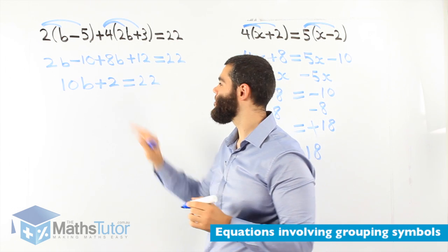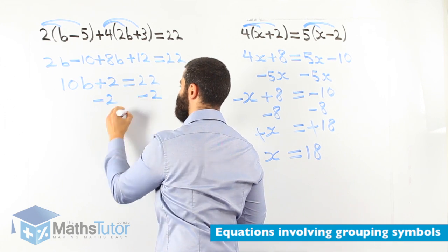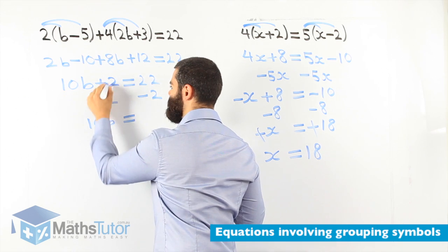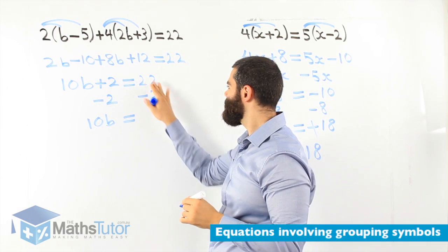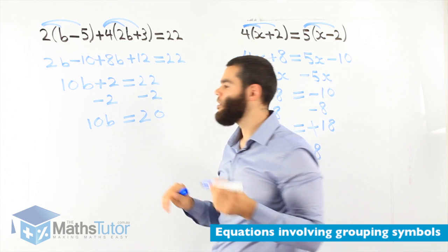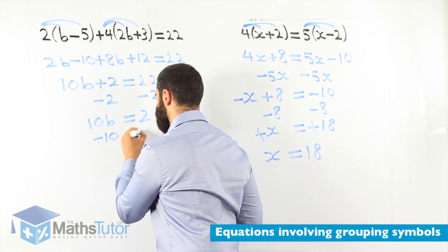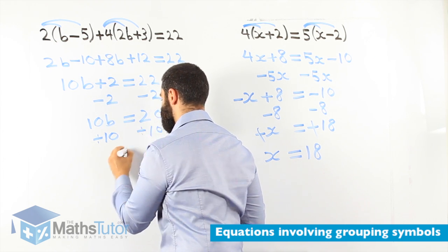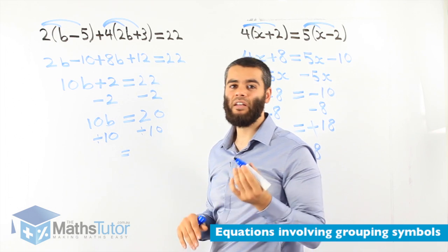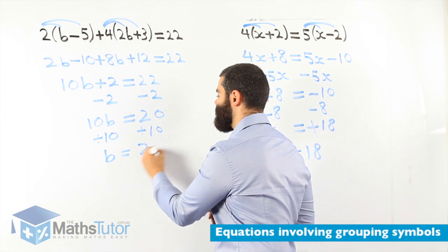Now, what? Well, it is an equation. 10b plus 2, we basically minus 2 from one side, minus 2 from the other side. 10b, because 2 take away 2 is gone. 22 take away 2 is 20. 10b equals to 20. Now, 10b is 10 times b, so times the opposite is divide. 10b divided by 10. 10 divided by 10 is 1, 1b. And 20 divided by 10 is simply 2.